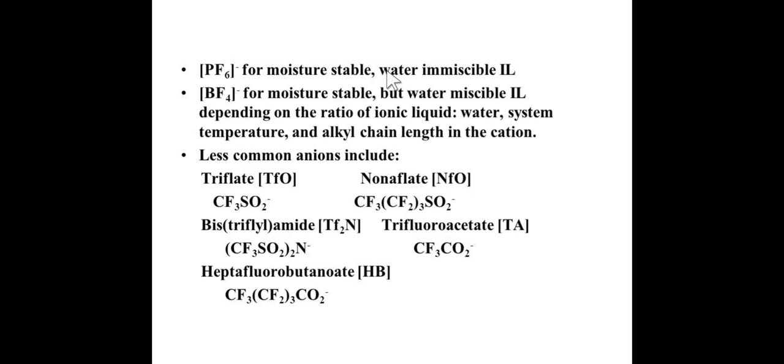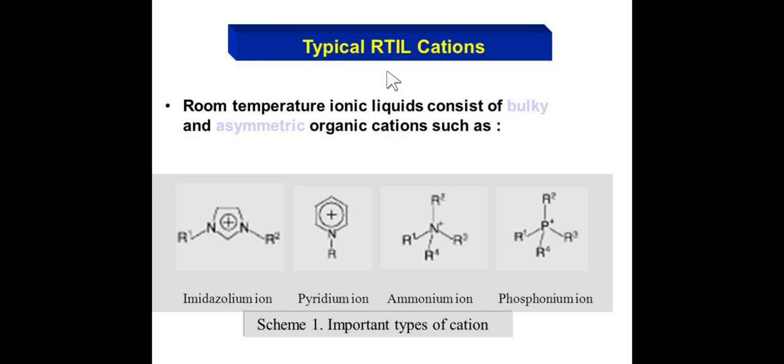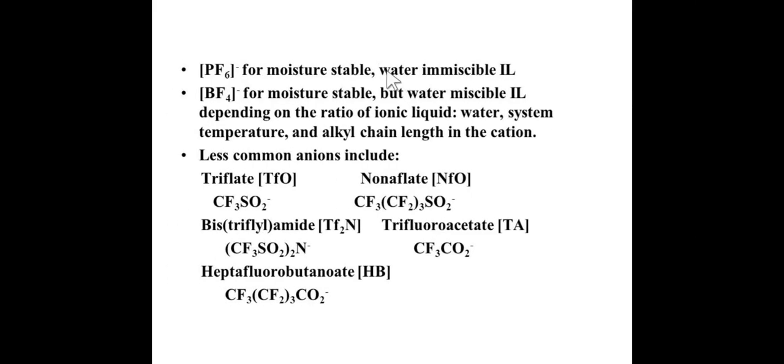PF6 minus, BF4 minus, and so on. These are the common anions we use in ionic liquids. Cations are these heterocyclic nitrogen-containing compounds and anions are PF6. Even Cl minus is a simple anion used in the formation of ionic liquids. Later on, we will see the synthesis of ionic liquids.